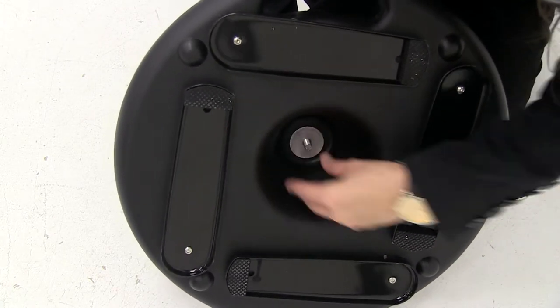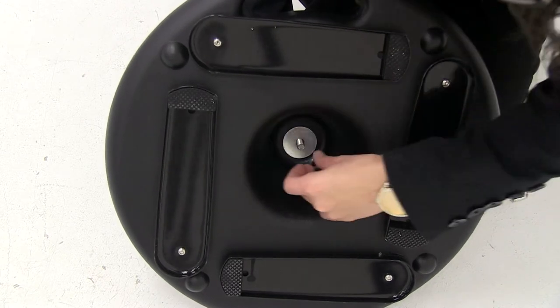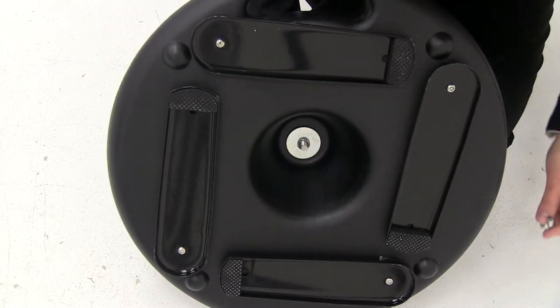Insert the large washer and the lock washer onto the support post. Use the included wing nut to secure.